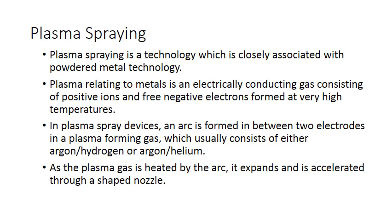Plasma spraying is a technology closely associated with powdered metal technology. Plasma, in relation to metals, is an electrically conductive gas consisting of positive ions and free negative electrons formed at very high temperatures. In a plasma spray device, an arc is formed between two electrodes in a plasma-forming gas, which consists of argon-hydrogen or argon-helium. As the plasma gas is heated by the arc, it expands and is accelerated through a shaped nozzle.